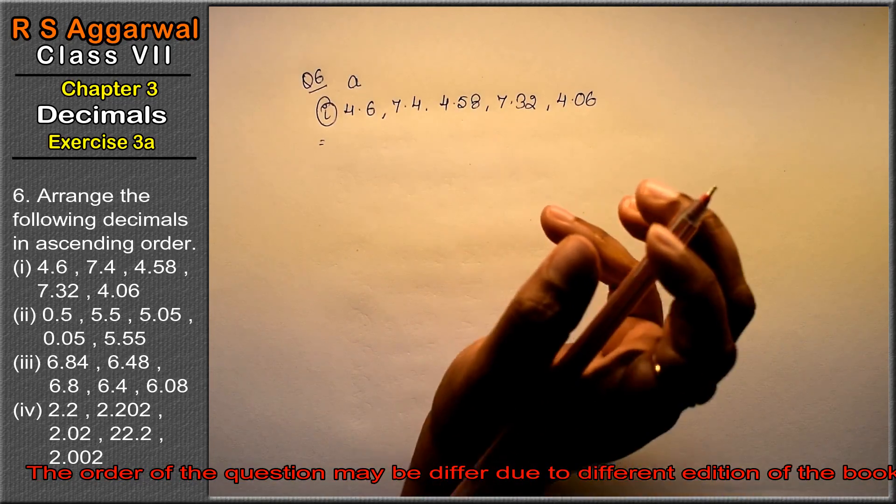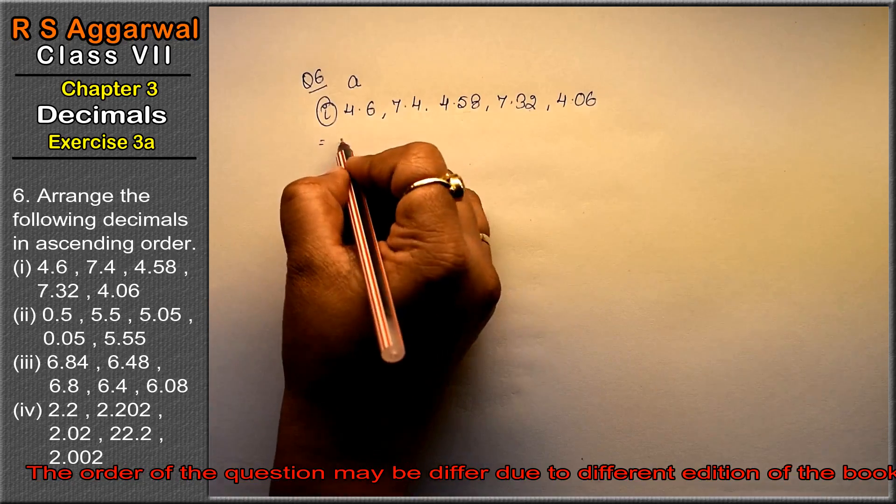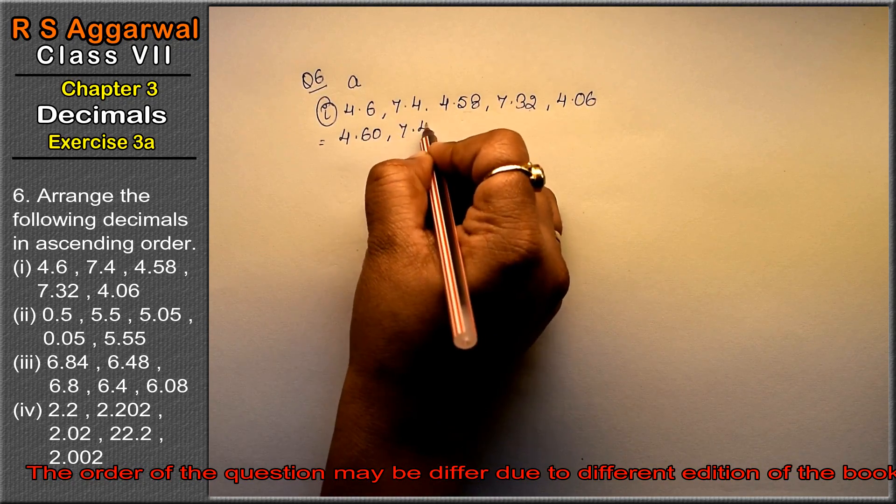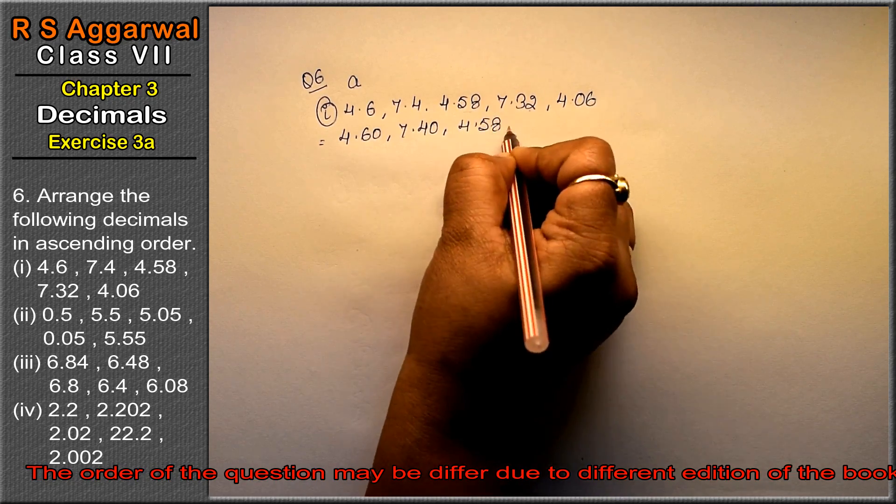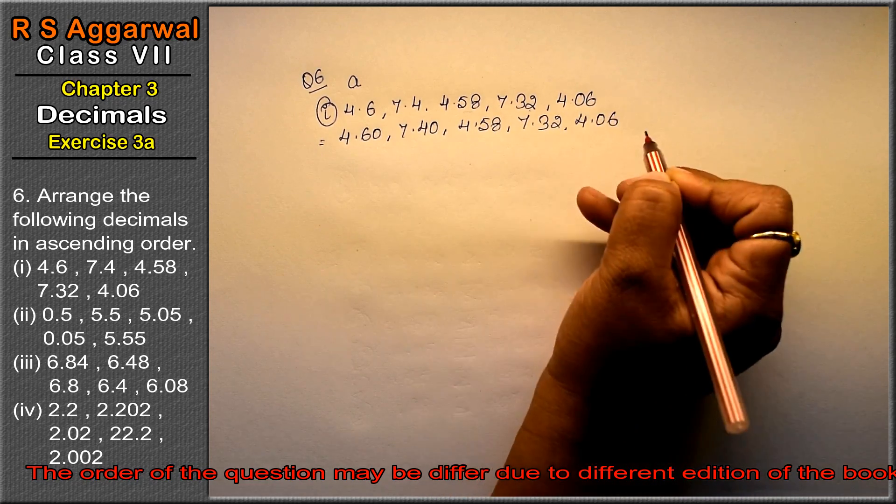The best method, friends, is to first convert them to like fractions. See, 2 decimal places is the maximum, so we'll convert to like fractions: 4.60, 7.40, 4.58, 7.32, and 4.06.